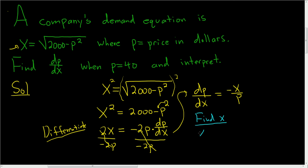So let's use our original equation. x is the square root of 2000 minus p squared. And to find x, we know that p is going to be 40. So we just plug in 40 for p.